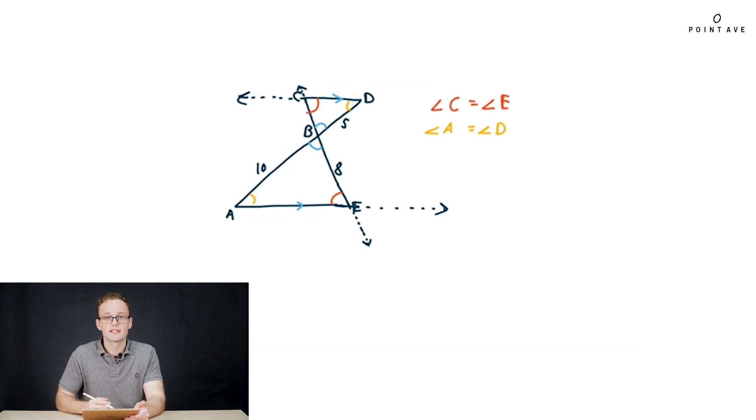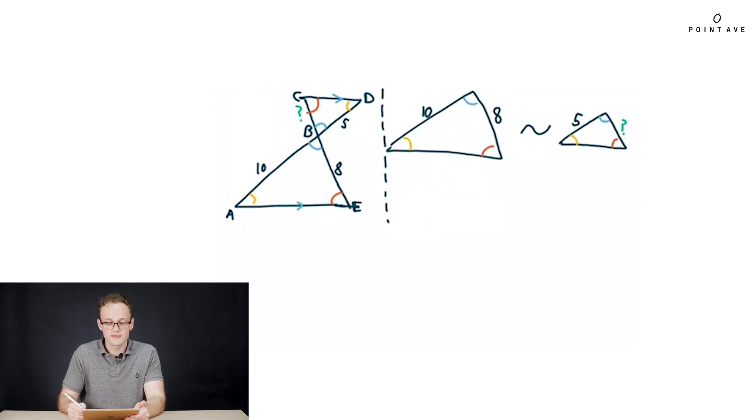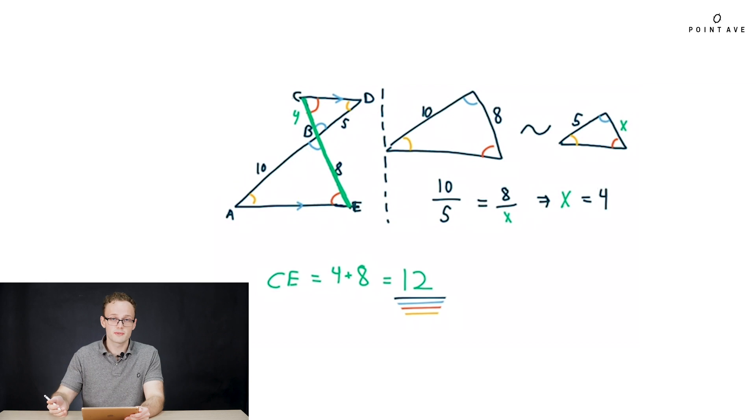So we have all of these equal angles, which tells us that we have a pair of similar triangles. So pulling out our similar triangles and copying over the side lengths, we see what we have here. And we can use these similar triangles to set up a proportion, including x, because we know that similar triangles have proportional side lengths. This gives us the equation we have here, 10 over 5 equals 8 over x, which we can easily solve for x equals 4. Now that we have that unknown side length, we can plug in to our full diagram and see that what we're looking for is the full length CE, which is just the sum of the first part, 4, which is found, and the other part we were given, 8. So our final answer then is 12.